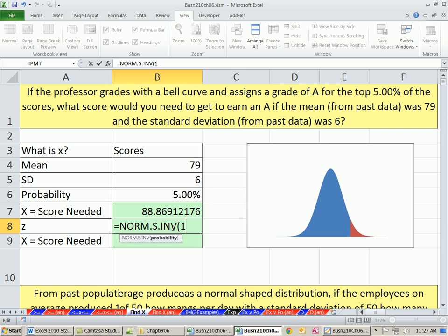So it'll spit out a Z instead of an X. All we need is the probability. So about 1.64 standard deviations above the mean is what you need to get into the top 5% to get your A.